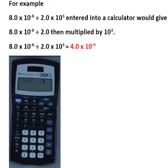Let's look at this division example. We have 8 times 10 to the minus 6 divided by 2 times 10 to the third. If we enter this into our calculator the way that it is actually written...